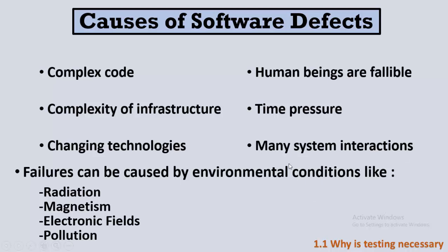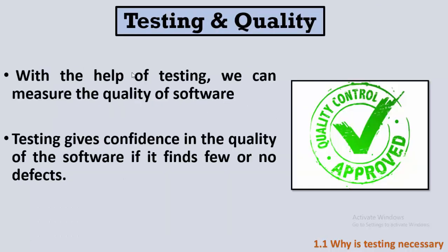Defects or failures can also be caused by environmental conditions like radiation, magnetism, electronic fields, or pollution. For example, you may use your GPS on your mobile phone and then go into a tunnel where the GPS stops working — this is not a bug; it is an environmental condition.